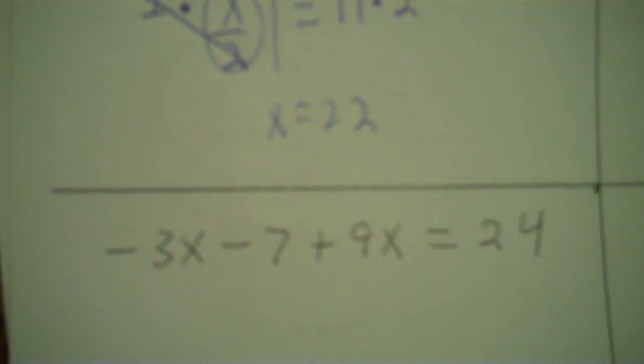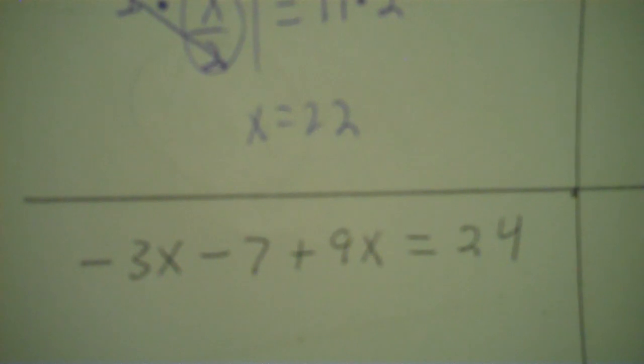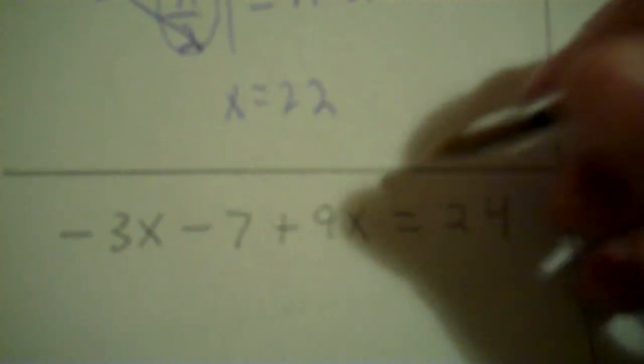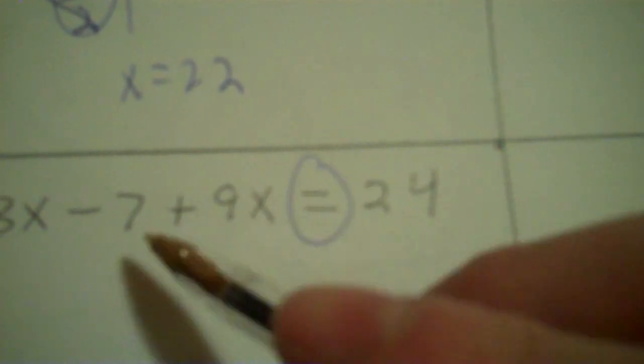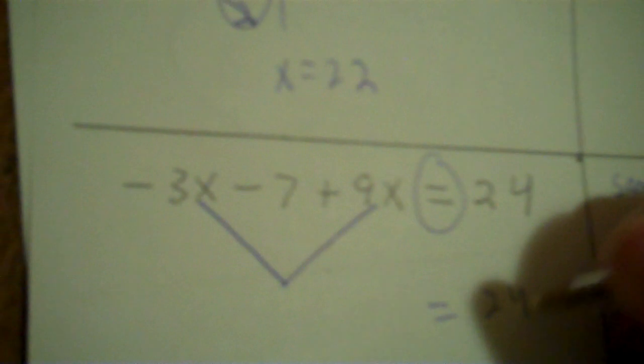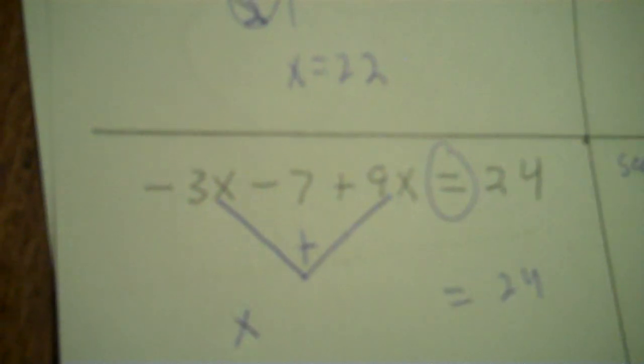Next one: negative 3x minus 7 plus 9x equals 24. You've got a little problem — there's two x's. Are they on the same side of the equals or on opposite sides? They're on the same side. If they're on the same side, you connect them with a V and add them together. You just plus them together as they are: negative 3 plus 9. Negative 3 plus 9 is 6.